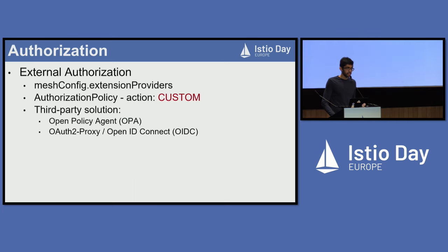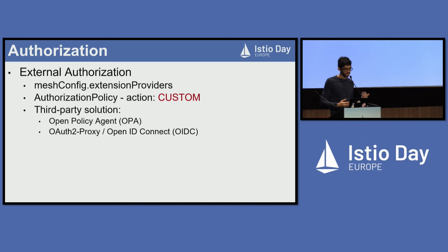While Istio's authorization policy on its own is pretty powerful and flexible, you might need a more sophisticated authorization mechanism like Open Policy Agent or OAuth2 proxy. If this applies to you, you could configure an external authorization provider through the Istio mesh config and set a custom action in the authorization policy to delegate the authorization decision to the external service.